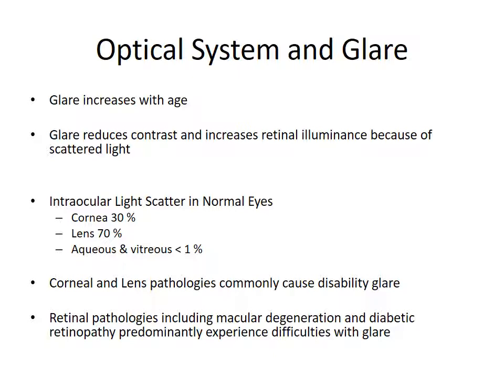To understand the physiological side of glare and its association with vision, note the intraocular light scatter percentiles in a normal eye. About 30% is produced from the cornea, 70% from the lens, and less than 1% from the aqueous and the vitreous. So in the context of an ocular pathology, glare would be an influential factor in functional vision abilities.